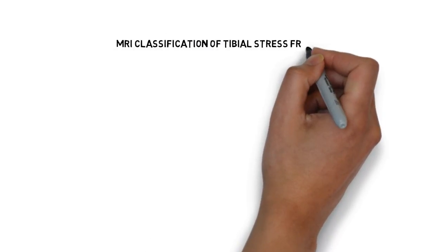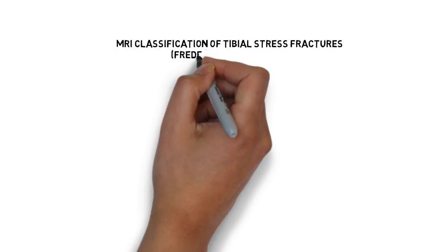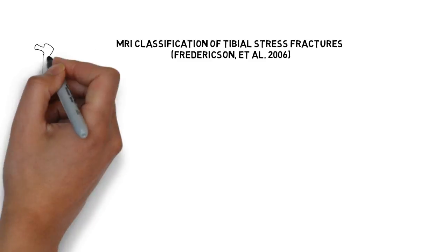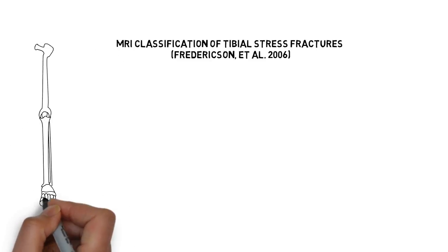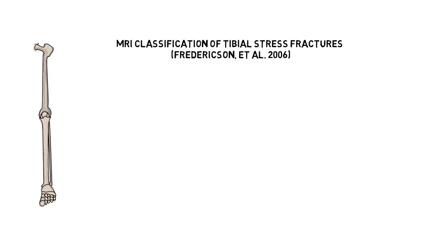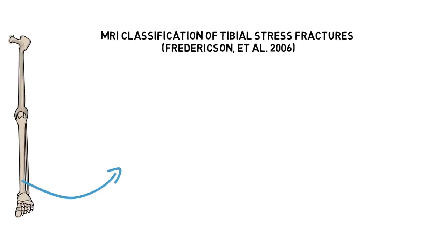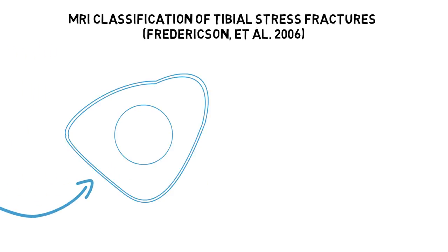This is a visualisation of work by Fredrickson and colleagues showing how tibial stress fractures are classified using MRI. Here we see the cross section of a long bone, the tibia.